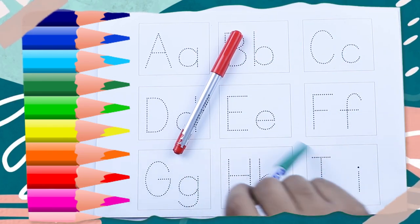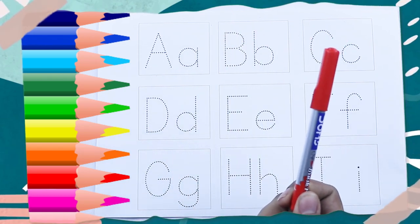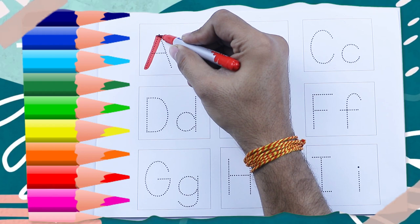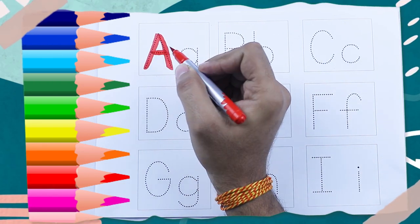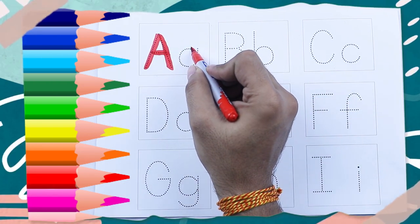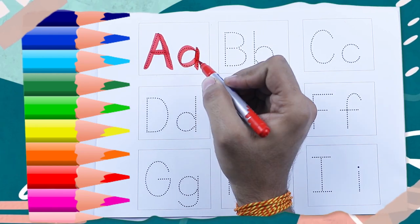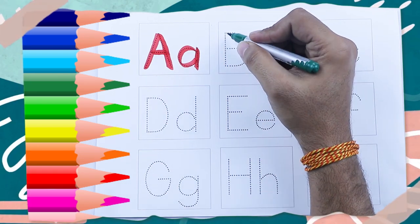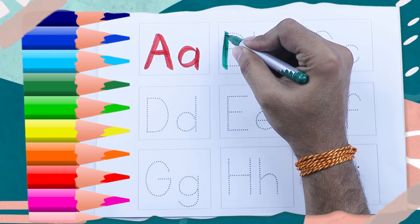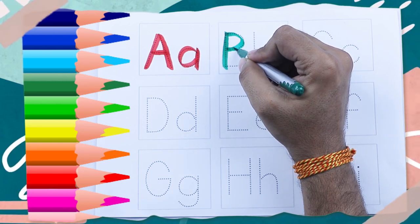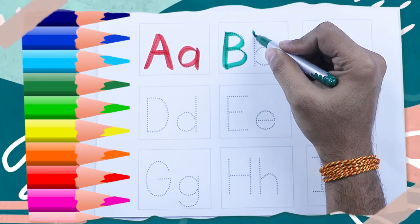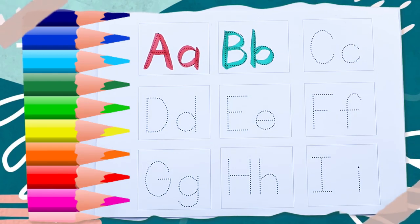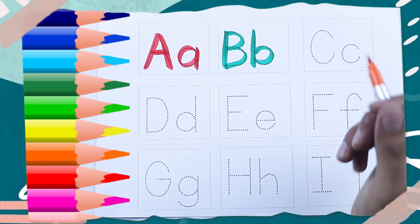Capital A, A for apple, red color. Small a, a for apple, orange color. Capital B, B for ball, green color. Small b, b for ball, orange color.